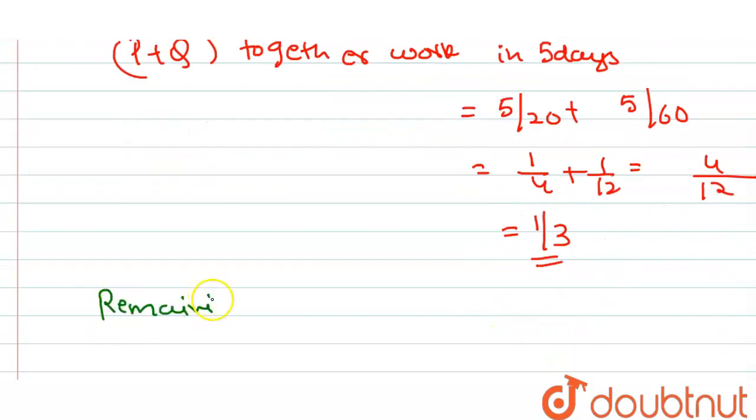तो remaining work क्या होगा? Remaining work equals to क्या हो जाएगा हमारा? Total work 1 minus, जितना काम कर लिया, तो यह value आएगी हमारी 2 by 3.